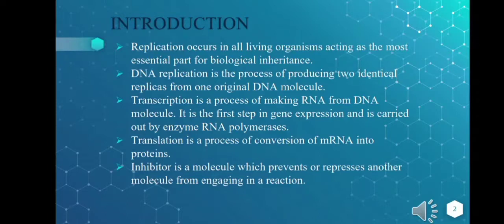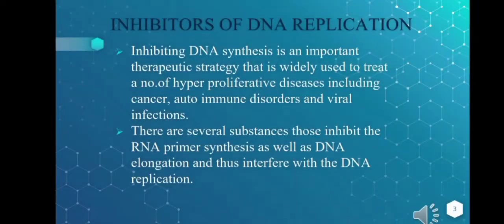Transcription is a process of making RNA from a DNA molecule. It is the first step in gene expression and is carried out by the enzyme RNA polymerase. Translation is the protein synthesis process — a conversion of mRNA into proteins. An inhibitor is a molecule which prevents or represses another molecule from engaging in a reaction.